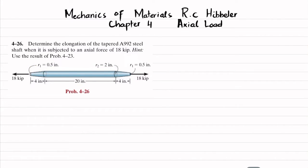So we have to find the total elongation due to this load. First we will write given data. It is given that this is tapered A-992 steel.